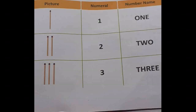See, look at the first row. Here how many math sticks are there? Only 1 and the number name O-N-E. In the second row how many math sticks are there? 2 and the number is 2 and the number name T-W-O.